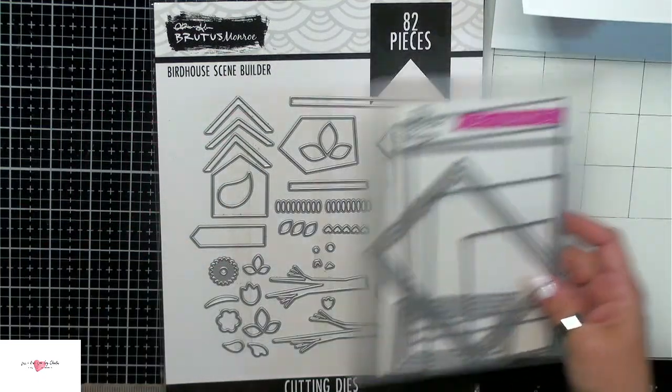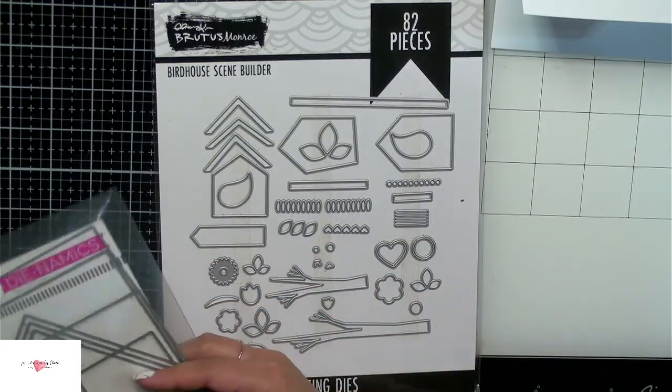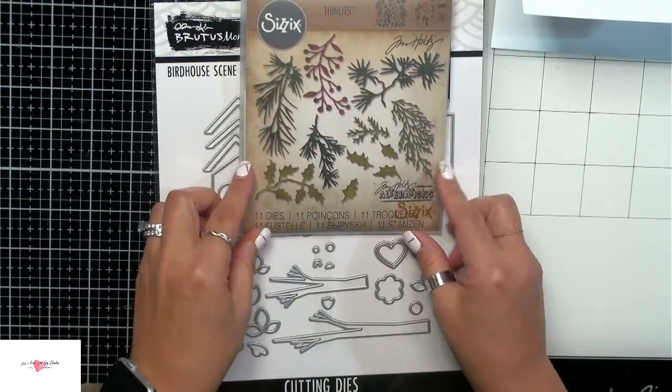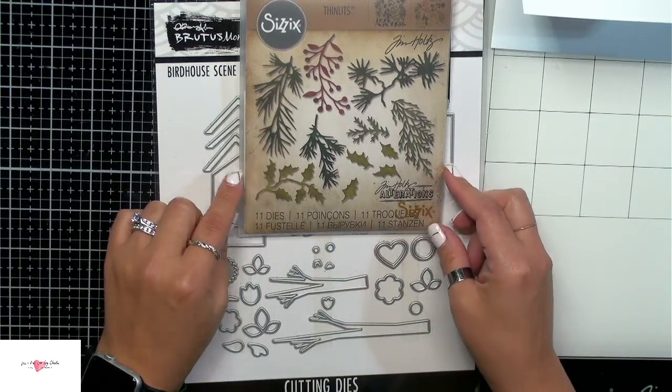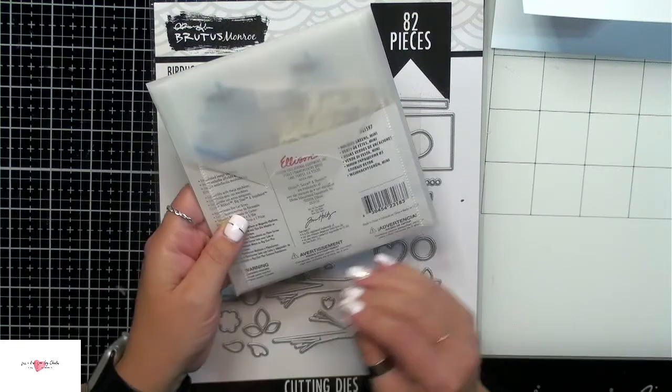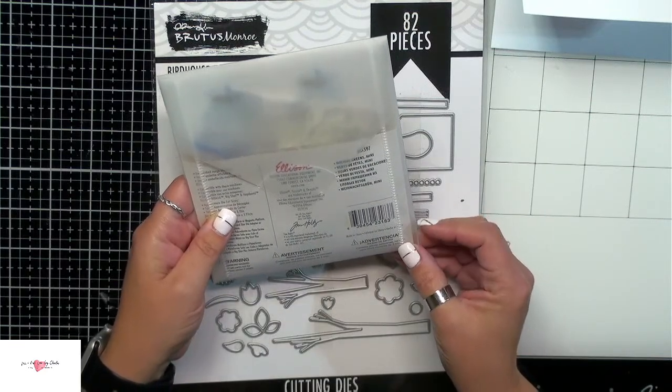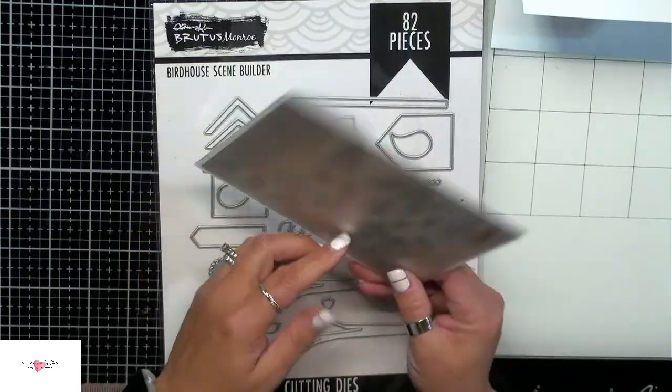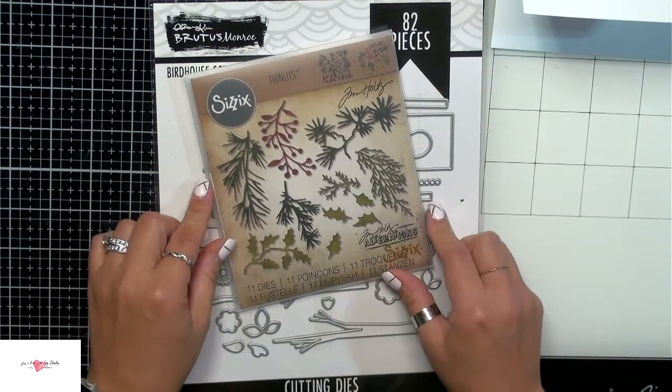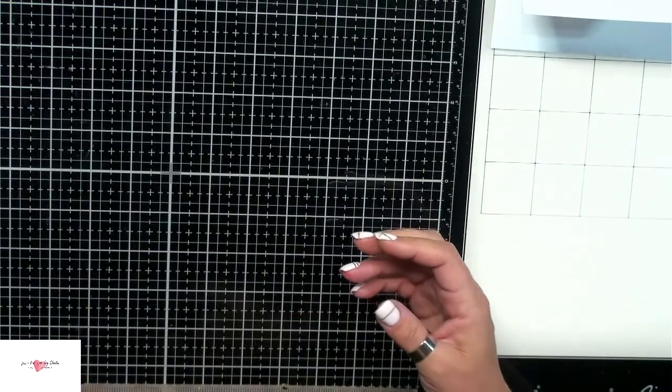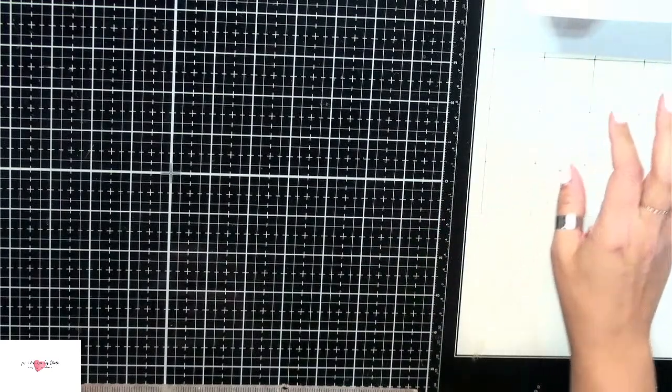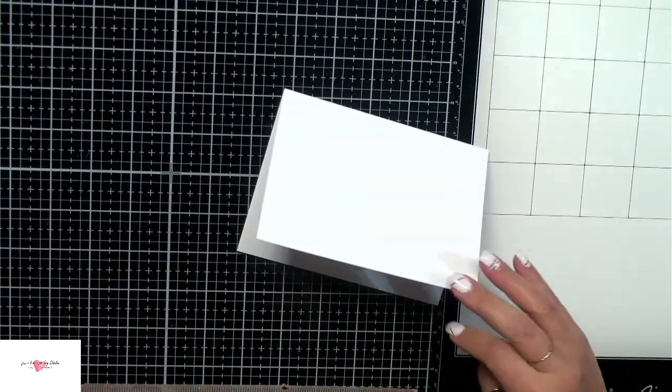I've also die cut some of these images from the Tim Holtz Thinlits. This is the set called Holiday Greens Mini. So I've also done some die cutting with some of these as well. Basically what we're going to do is just get started building up our cards.